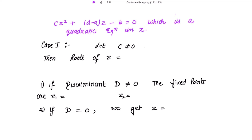Now the cases arise. Let c be non-zero first. Then the roots of this quadratic equation are: z equals a minus d, plus or minus the discriminant — that is, (d minus a) whole square plus 4bc — divided by 2c. These are the roots of z, and so these are the fixed points. If the discriminant is non-zero, we get two fixed points.